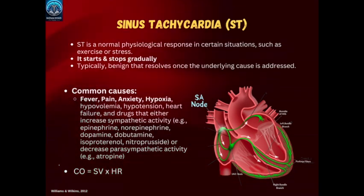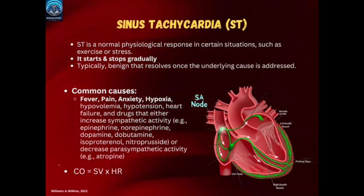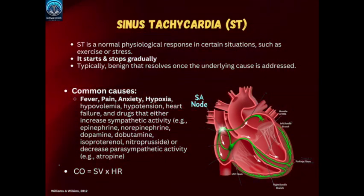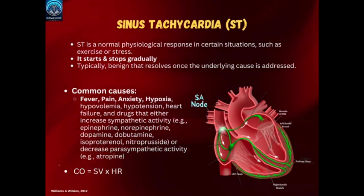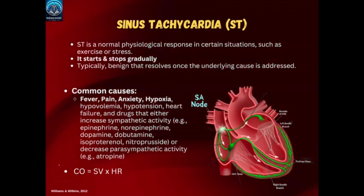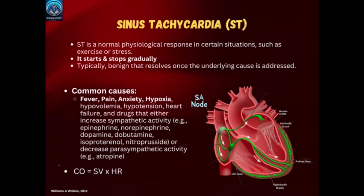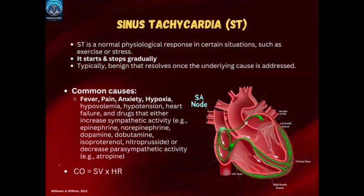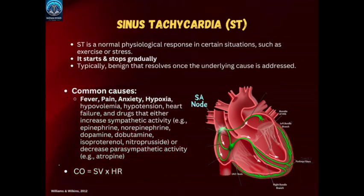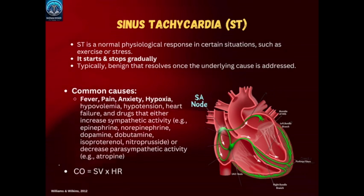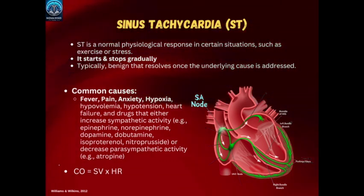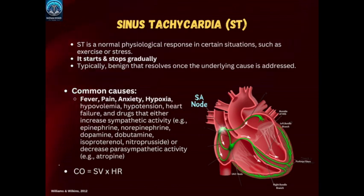It's also important to mention the formula: cardiac output equals stroke volume times heart rate. Cardiac output is the total volume of blood pumped by the heart in one minute. Stroke volume is the amount of blood pumped out of the left ventricle with each heartbeat, and heart rate is the number of heartbeats per minute. If you increase the heart rate or the stroke volume, you increase the cardiac output. For example, if a patient's heart rate goes up due to fever or stress, the cardiac output will also rise if stroke volume stays the same. Alternatively, medication that increases stroke volume will also boost cardiac output.